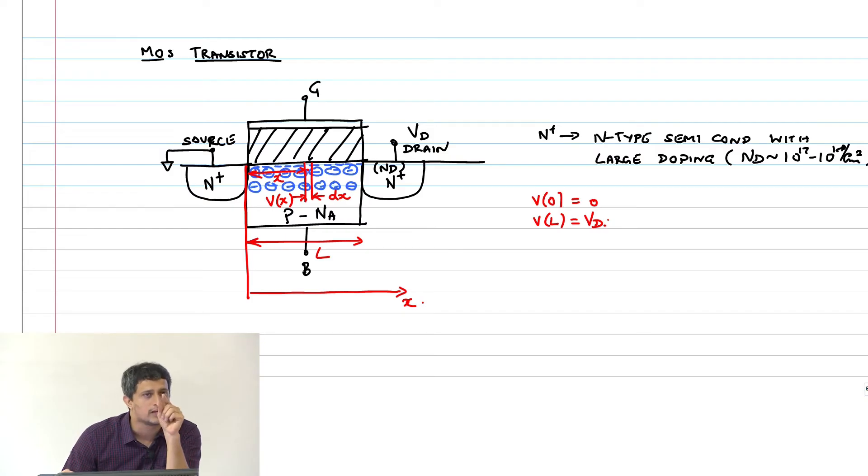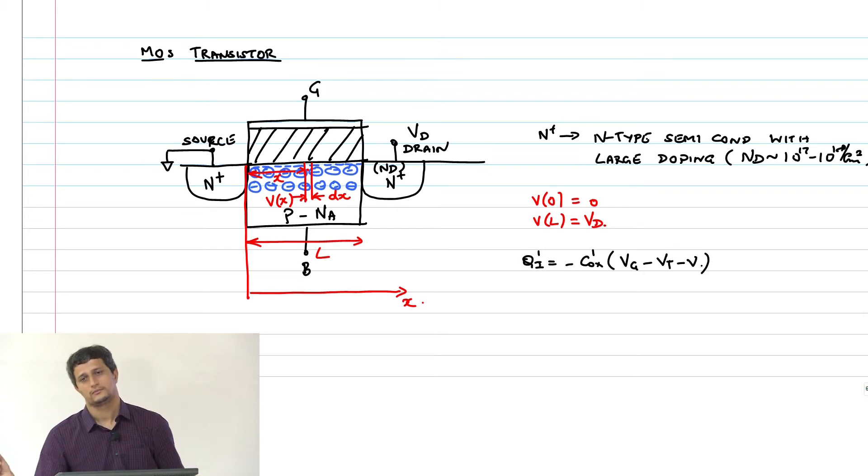So now, what is the amount of inversion charge that is available for conduction in that small element dx with width w? See that thing is already at a potential V, over and above that I need Vgs minus Vt - Vg minus Vt that can cause an inversion there.